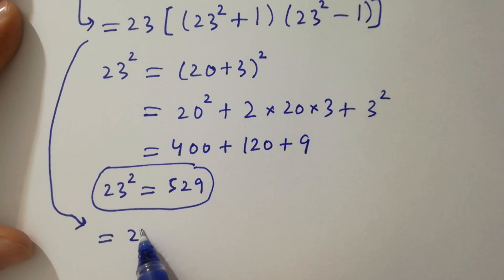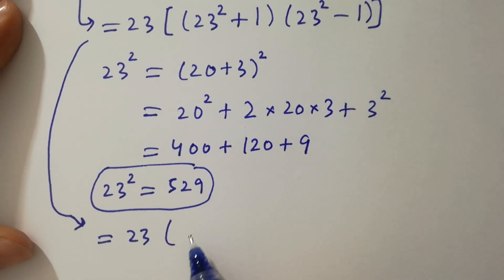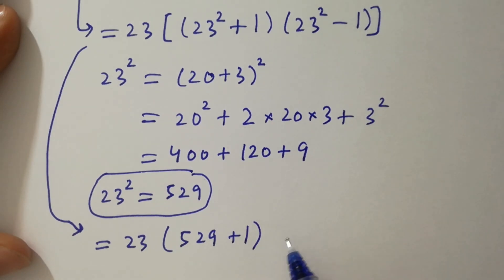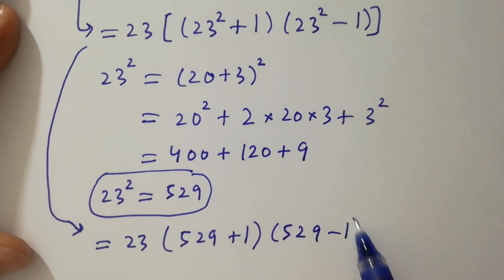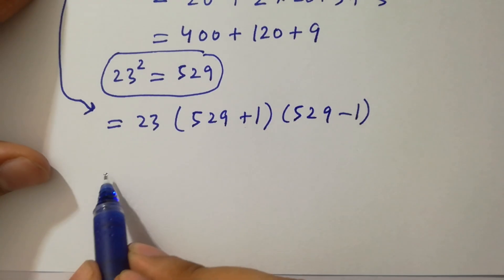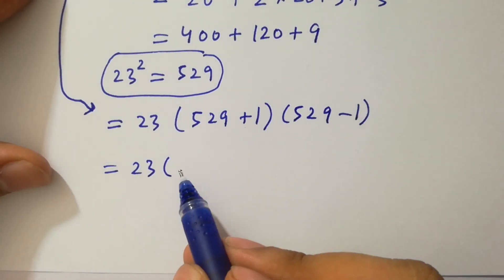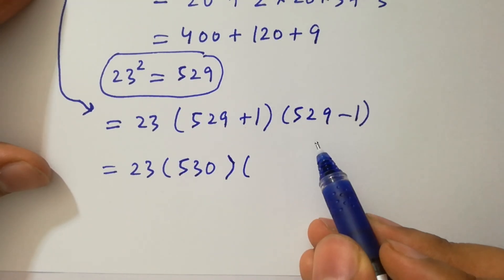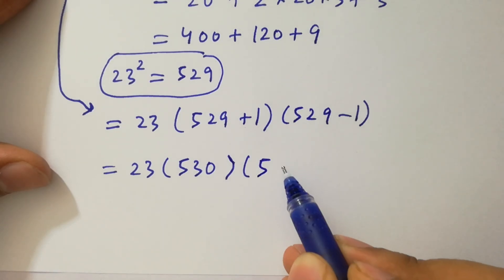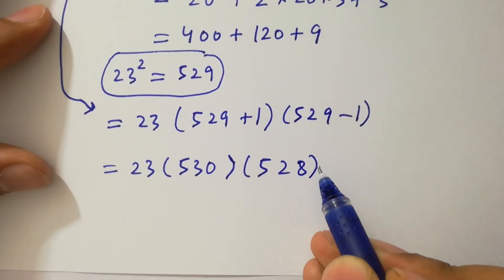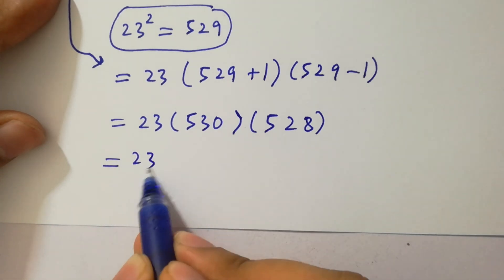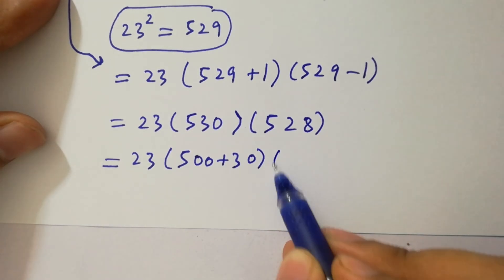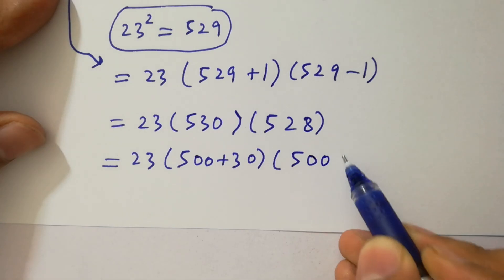Substituting back: 23 squared plus 1 is 529 plus 1 equals 530, and 23 squared minus 1 is 529 minus 1 equals 528. So we have 23 times 530 times 528. Now 530 is the same as 500 plus 30, and 528 is the same as 500 plus 28.